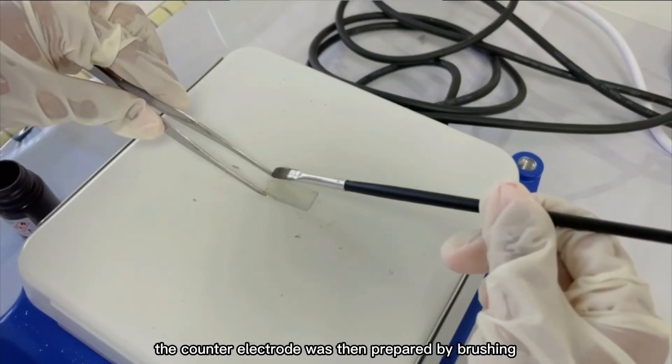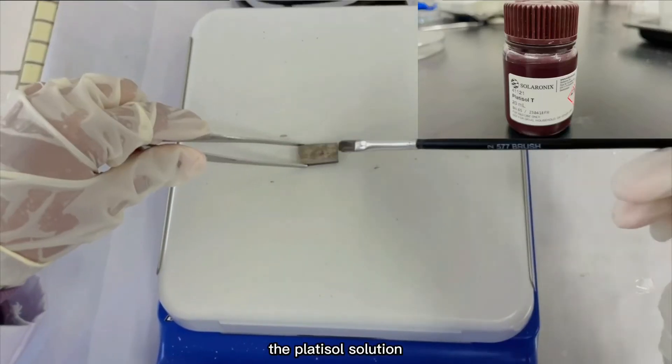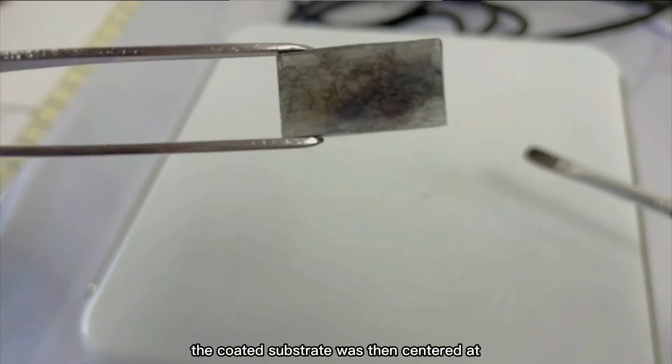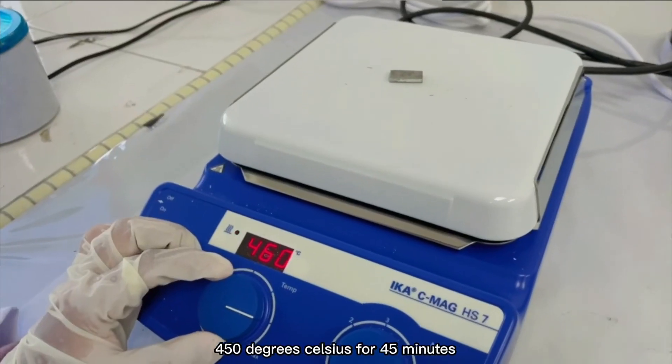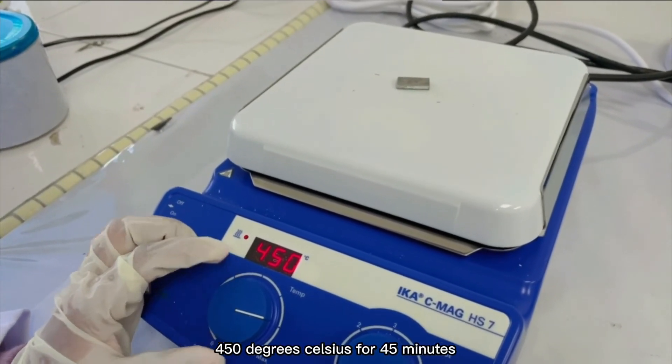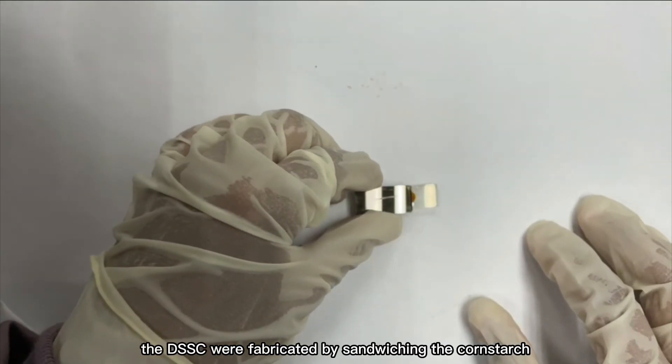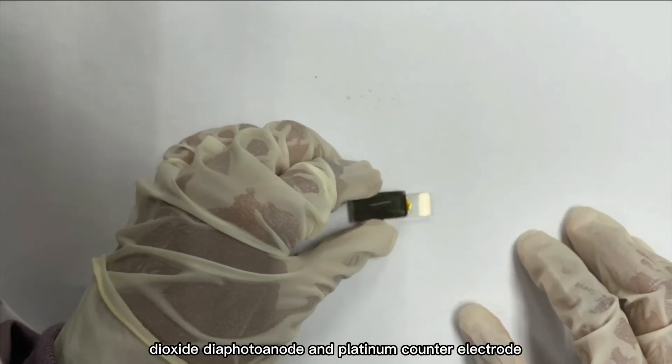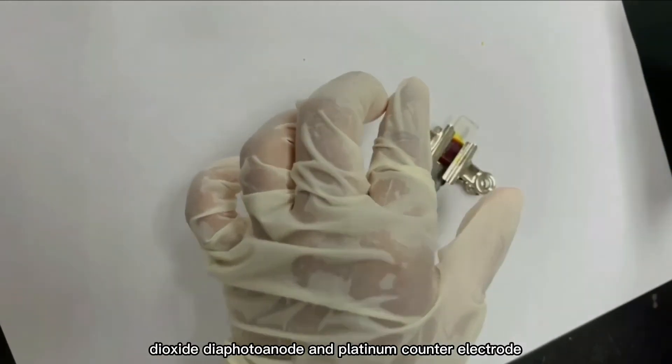The counter electrode was then prepared by brushing the plastic soil solution on the fluorine tin oxide conducting glass. The coated substrate was then sintered at 450 degrees Celsius for 45 minutes. The DSSCs were fabricated by sandwiching the cornstarch based gel polymer electrolyte between the titanium dioxide dye photoanode and platinum counter electrode.